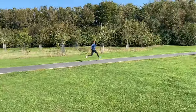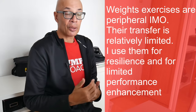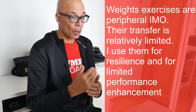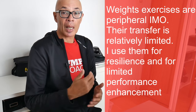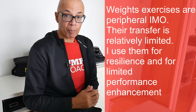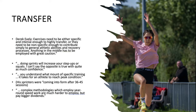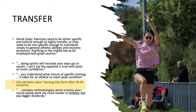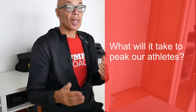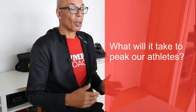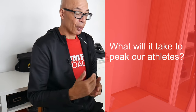Weight training in my case is there to maintain robustness and potentially provide older athletes with an element of performance enhancement. Everly also indicates that you need to understand what amount of specific training will get an athlete into peak condition. For example, his sprinters will reach peak speed after 36 to 45 specific sessions — something we as coaches have to bear in mind when planning what it will take to get our athletes to peak.